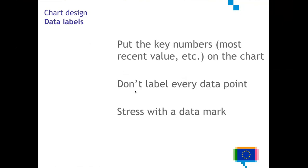Titles are usually the first thing people look at. Make sure the title is already telling the story of the chart — the takeaway message should be in the title itself so people are not left on their own to identify the message. Also make sure the title is not contradicting the message of the visualization. It should be one unit communicating the same message. You can add data labels to charts, like putting key numbers in there, highlighting the most recent value by explicitly mentioning it. But don't label every data point, as this can get overwhelming. Stress the most important data points by highlighting them with a circle, for example.